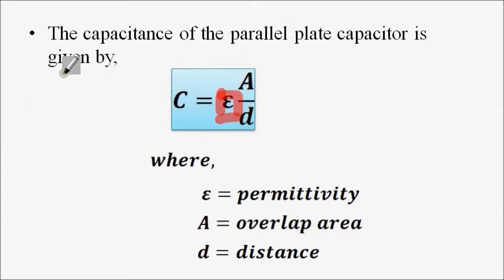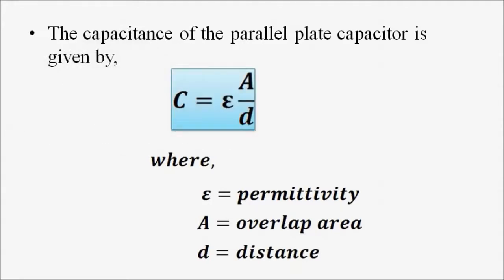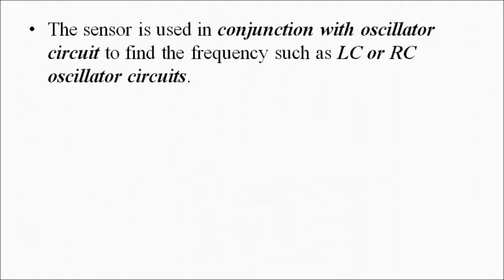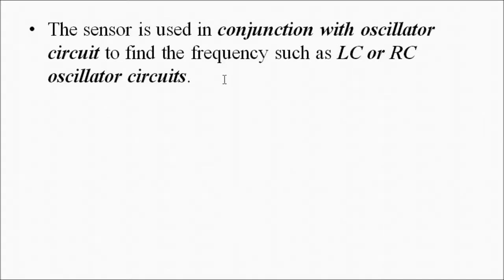The dielectric constant can either increase or decrease with respect to change in moisture levels, which gives rise to a change in capacitance. This capacitance change can be converted into a suitable voltage or current, or it can also be expressed in terms of frequency values, if we connect it with a suitable LC or RC oscillator circuit, or we can use AC bridges.